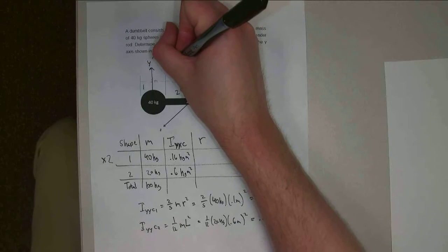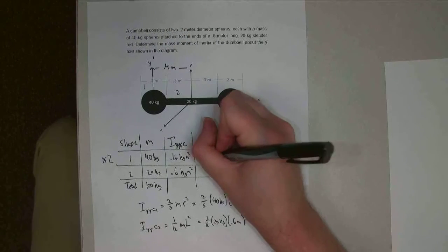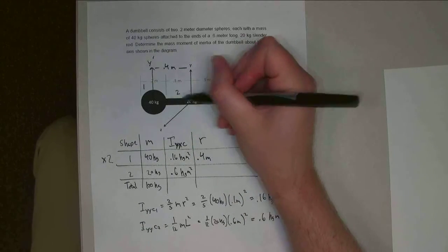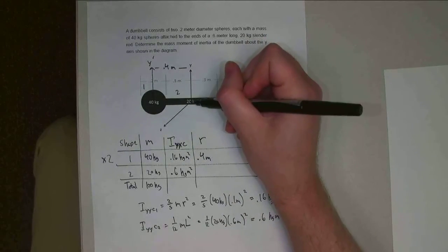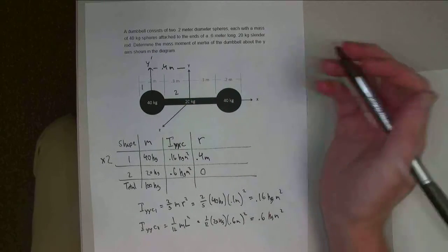This is 0.4 meters is my separation. And then for the center of my rod, that happens to be the exact same center of the overall piece, so this one is 0. There is no adjustment for this second part.